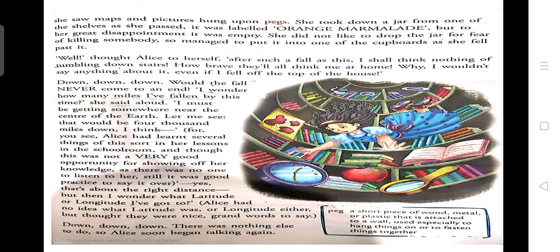Alice just used the words latitude and longitude — latitude aur longitude just use karne ka reason sirf yeh hai ki woh bas dikhana chahti hai ki haan mujhe kaafi zyada knowledge hai. These were grand words to say, that means Alice ne latitude and longitude words sirf isliye use kiye kyunki woh kaffi attractive aur grand words the. But usse khud bhi nahi pata ki what is latitude and longitude. 'Down, down, down — there was nothing else to do,' so Alice soon began talking again. The fall was still continuing — abhi bhi Alice fall ho rahi hai, so wahan pe Alice phir se apne aap se baat karti hai.